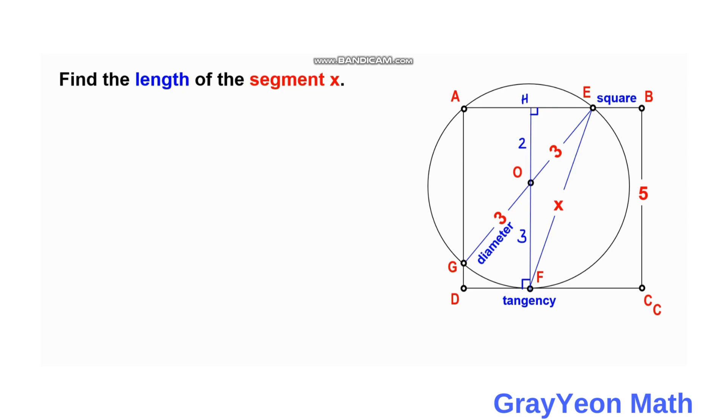Okay, so I labeled this perpendicularity of O to segment AE as H, and next is we focus on this triangle HEO.